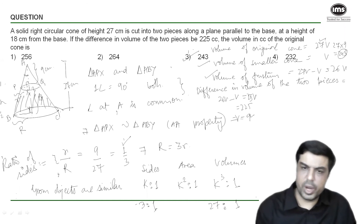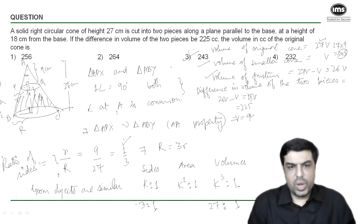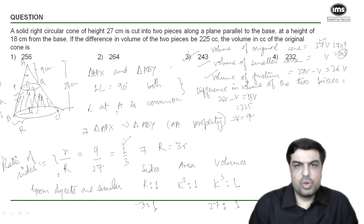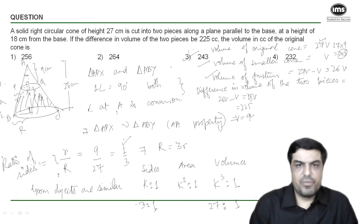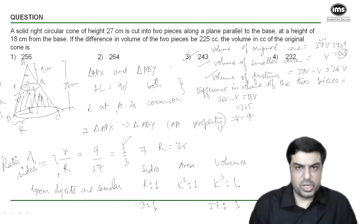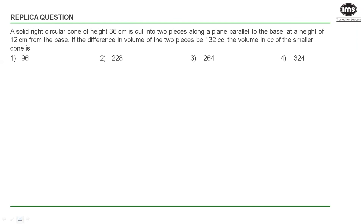Once we got the ratio of sides of similar objects, we could extend that to say the volume ratio is the cube of the side ratio and get the answer directly, without calculating volumes separately. I hope you understood the question and the two different approaches. I have a replica question for you — please attempt it and leave your answers in the comment section. Thank you.